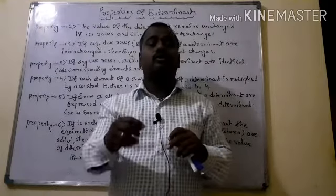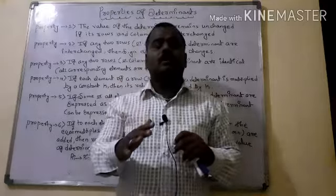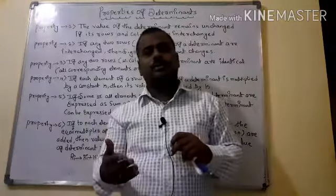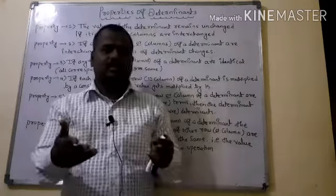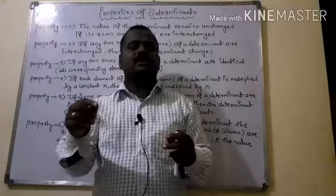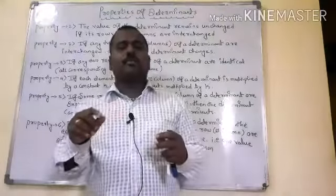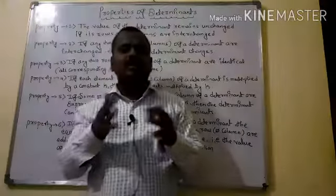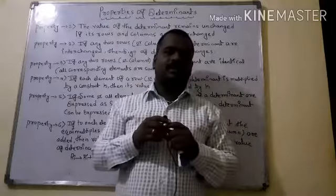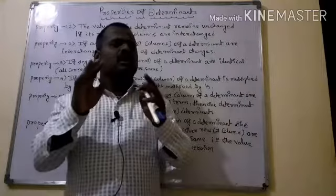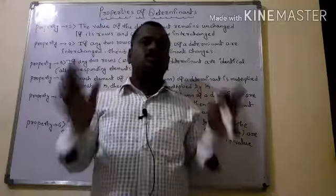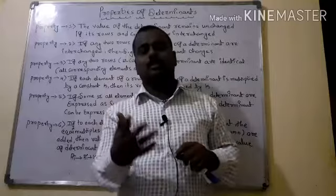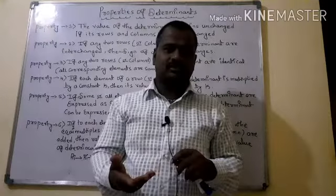Let us discuss them one by one. The sixth property is: Ci → Ci + k·Cj, and Ri → Ri + k·Rj. These are the six properties. These are not important at present in the current syllabus, but for competitive test purposes and knowledge purposes, we are going to discuss them.